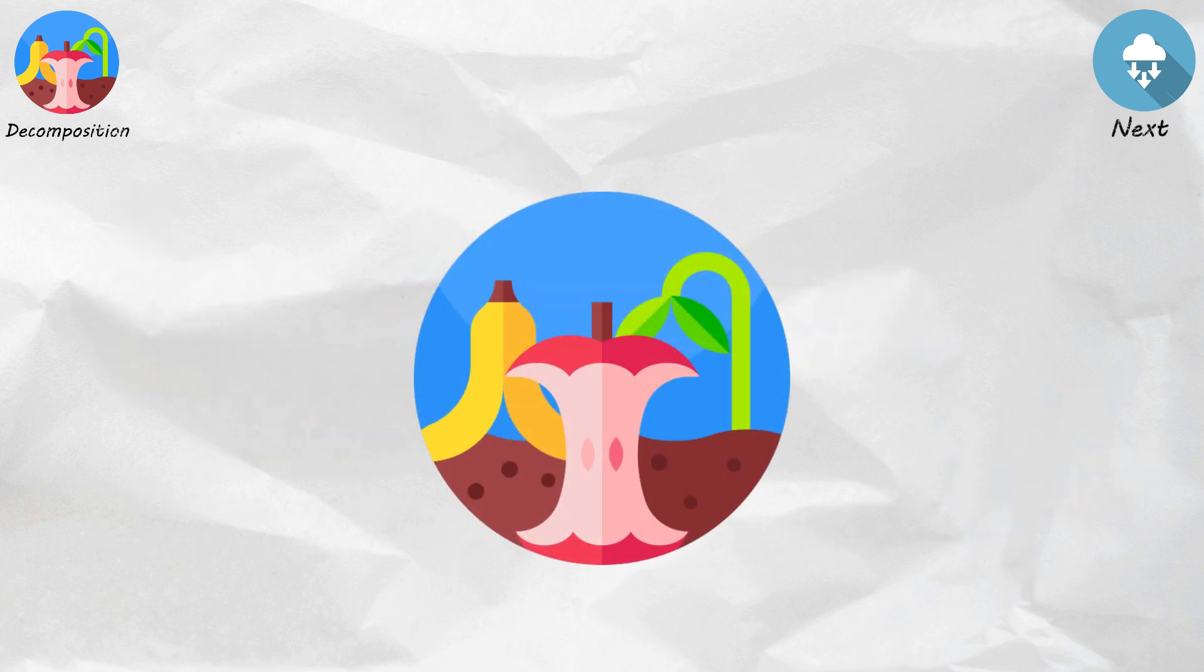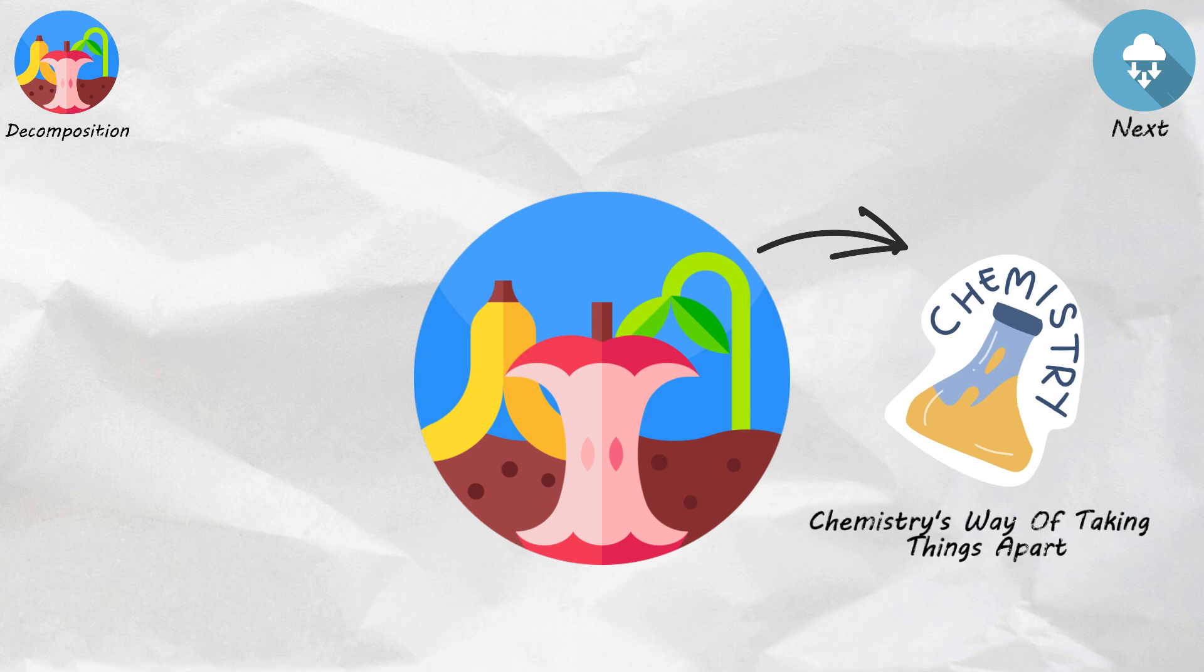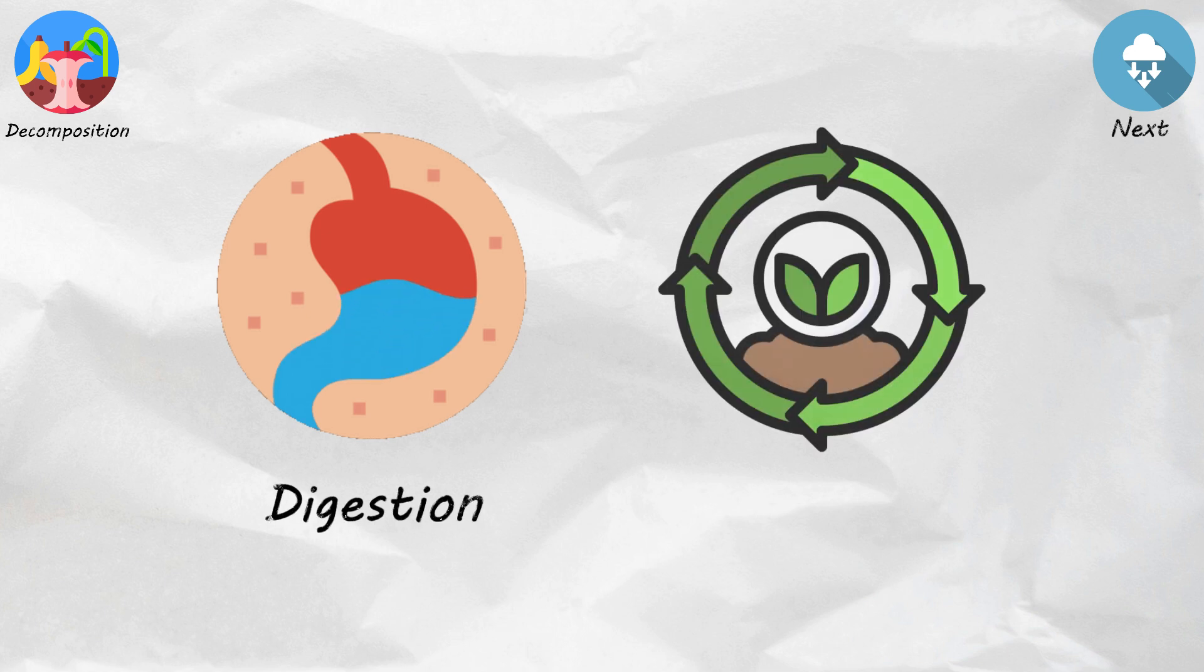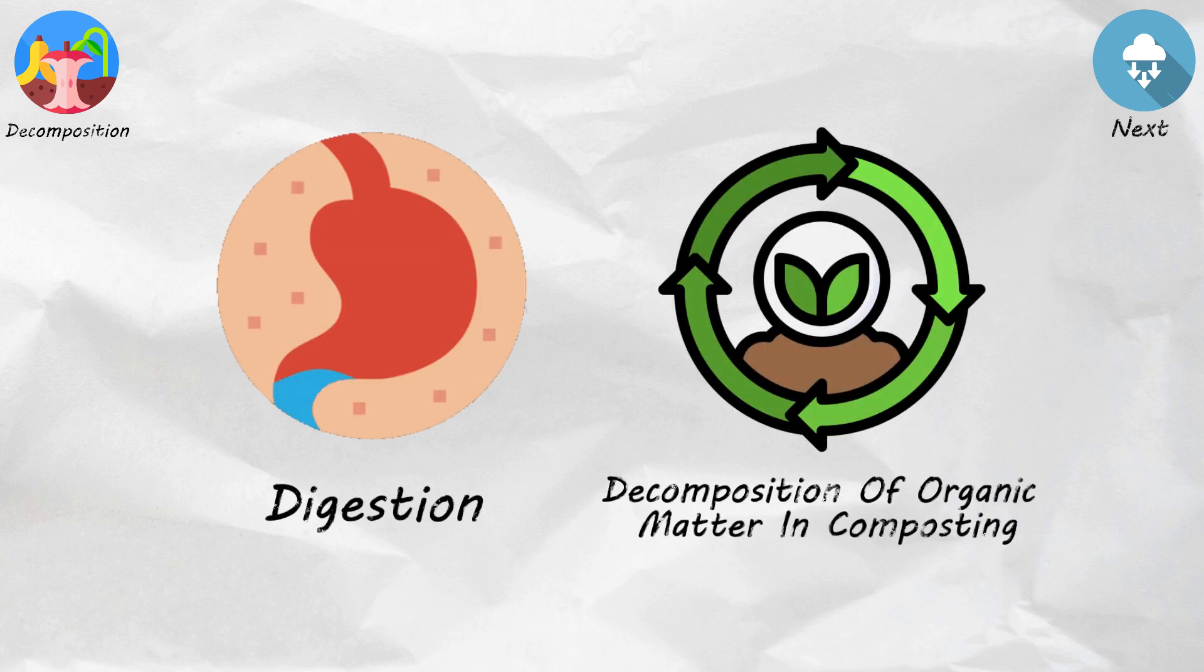Decomposition reactions are like chemistry's way of taking things apart, revealing their hidden ingredients. They are also used in processes like digestion and the decomposition of organic matter in composting.